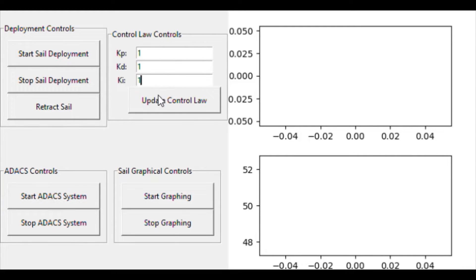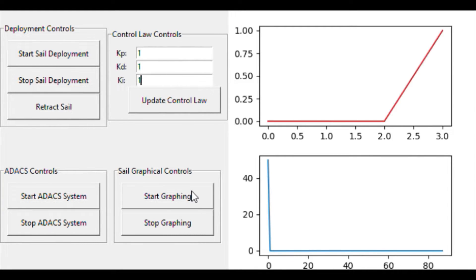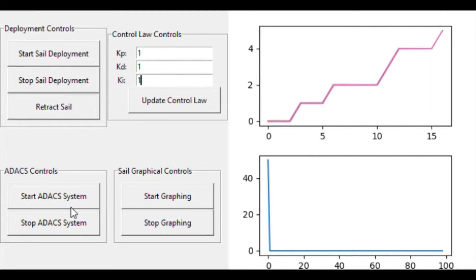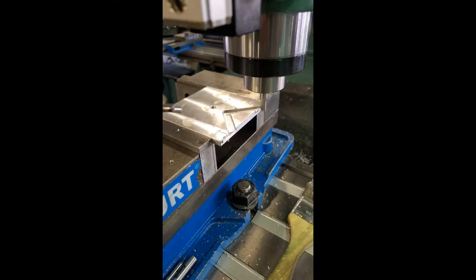It interacts with the reaction wheels and gyroscopes over a SPI and I2C interface. It controls the sail deployment by sending commands to an MSP430 board. The Pi also has a GUI to record and graph data. The Pi can be accessed over RIT Wi-Fi.